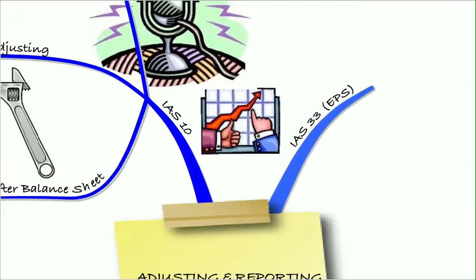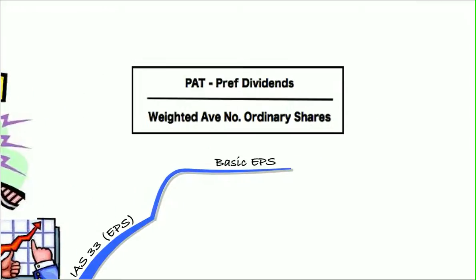Moving on then to IAS 33, earnings per share. Remember, to calculate our basic earnings per share, we did this: profit after tax less preference dividends over the weighted average number of ordinary shares.